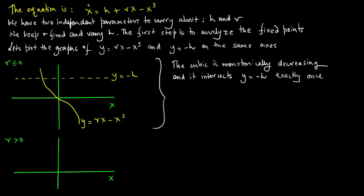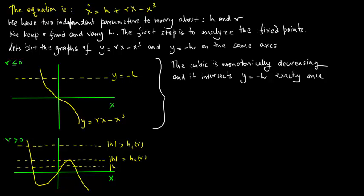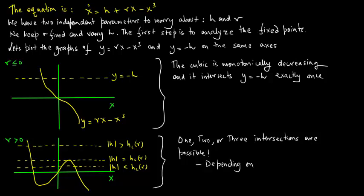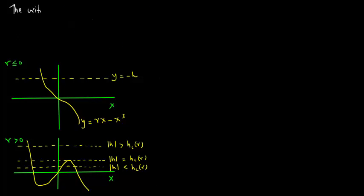For r greater than 0 we get a much more interesting scenario. That's the curve and that's one intersection, that's another intersection, and then we get a third intersection. So we can get one, two, or three intersections and all of these are possible depending on the value of h.